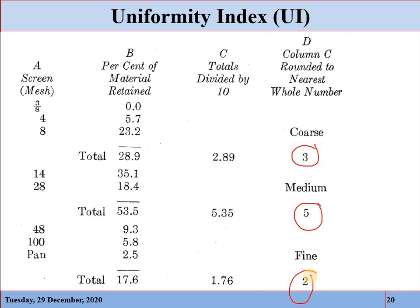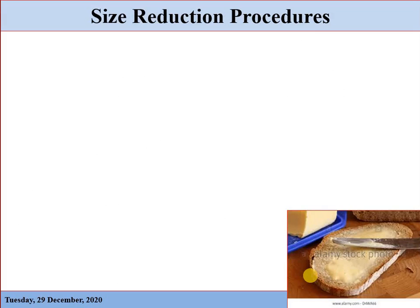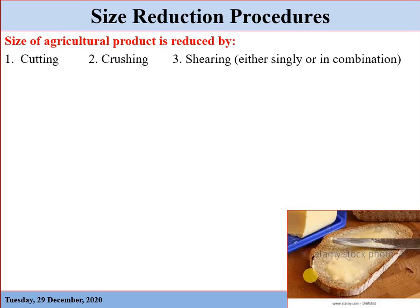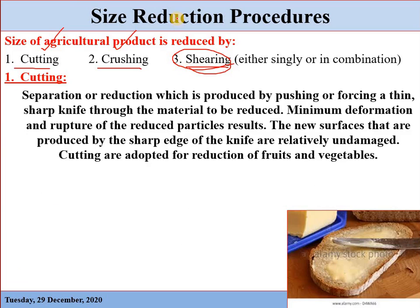That was just a revision of the previous lecture. Now we will start the procedures of size reduction. Mainly we have three procedures through which an agricultural product can be reduced: one is cutting, the second is crushing, and the third is shearing. Shearing is the combination of cutting and crushing.